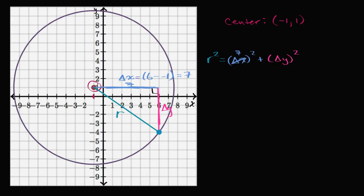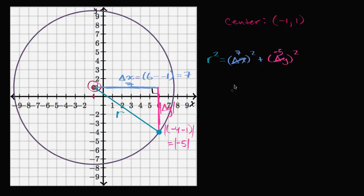And our change in y — we are starting at y equals one, and we are going to y equals negative four. So it would be negative four minus one, which is equal to negative five. Our change in y is negative five. You could view this distance as the absolute value of negative five, but once you square it the negative sign goes away. So change in x squared is 49, and change in y squared — negative five squared — is 25. We get r² = 49 + 25.